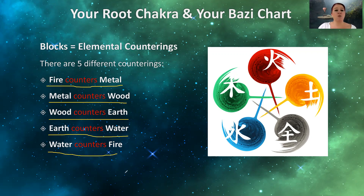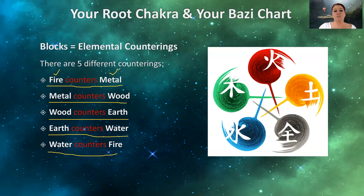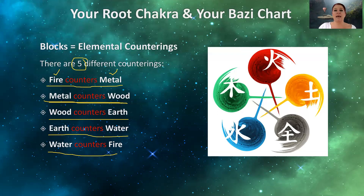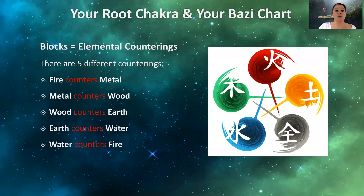If you remember the chart we just looked at, we had water and metal. These are not in a countering relationship, therefore there is no block. Only if you have one of these five specific relationships is there a block. So maybe you would have fire at the top and metal at the bottom, or metal at the top and fire at the bottom. Or maybe metal at the top and wood at the bottom, or wood at the top and fire at the bottom. There are only five different types of counterings — these are the pairings. If you see any of these five pairings in your hour pillar, that constitutes a countering and therefore a block.